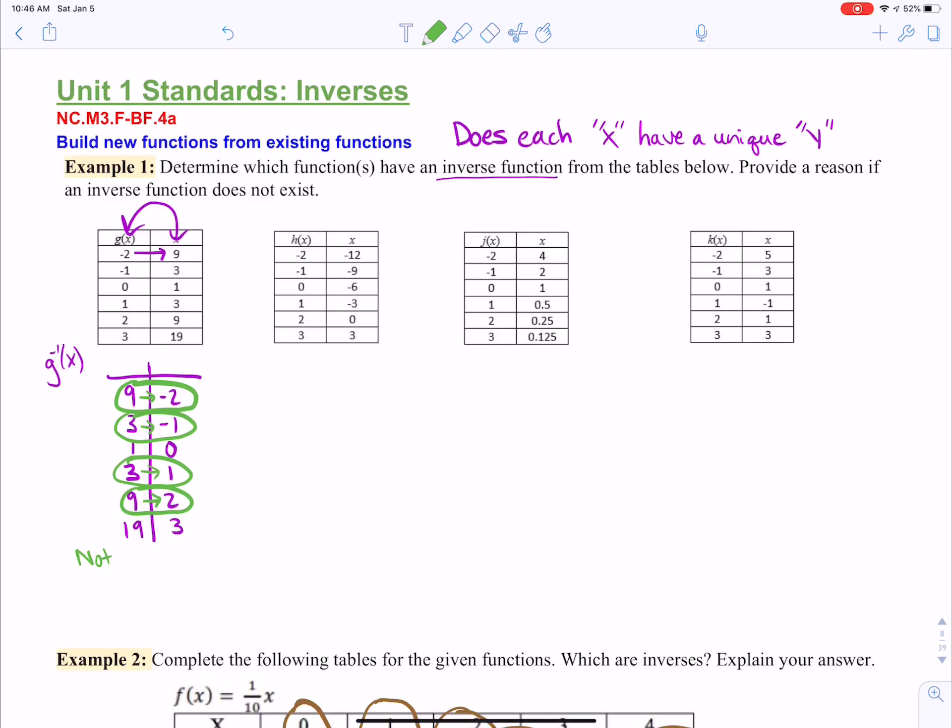So first we found the inverse, but it does not have an inverse that is a function, not an inverse function. So it has an inverse, but it's not a function. And it's because each x does not have a unique y, like I wrote up there at the top. That is the reason.